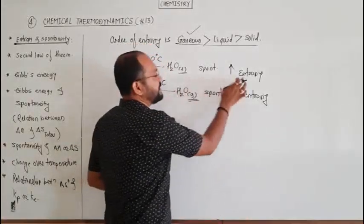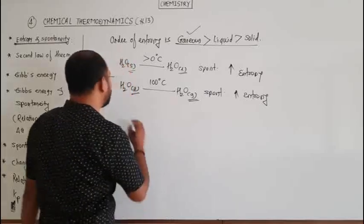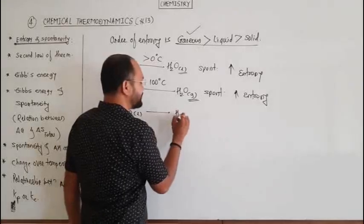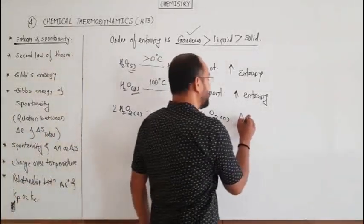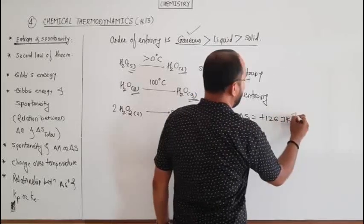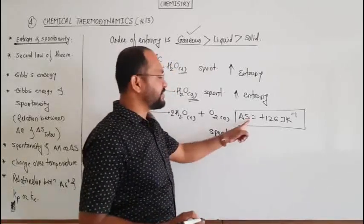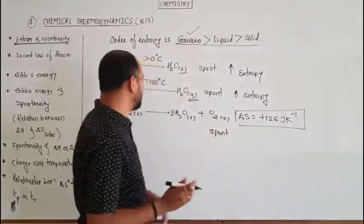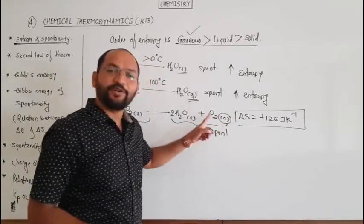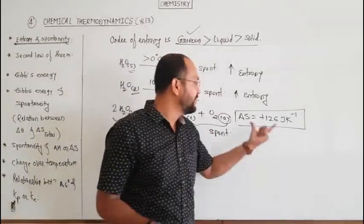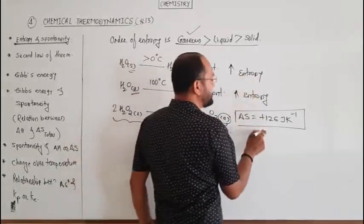In both these processes, entropy of the system increases. If you consider the decomposition of hydrogen peroxide — H2O2 liquid undergoes decomposition to form H2O liquid plus O2 gas — in this process delta S is plus 126 joule per kelvin. Decomposition of hydrogen peroxide is the spontaneous process in which disorder of the system increases, or entropy increases. On the reactant side we have liquid; on the product side we have liquid plus gas. The formation of the oxygen gas molecule increases the disorder of the system, and therefore entropy increases.